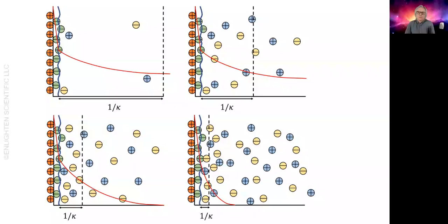Let's look at the effect of different electrolyte concentrations on the thickness. On the top left we have a dilute electrolyte. The decay is slow.